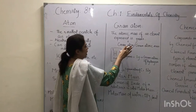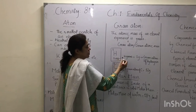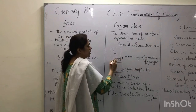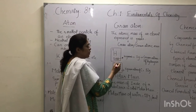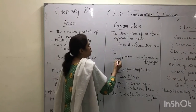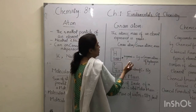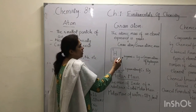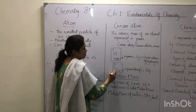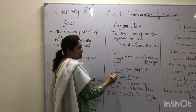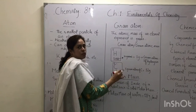A gram atom is the atomic mass of an element taken in grams. From the periodic table, the atomic mass is given with each element, and expressing that in grams gives you the gram atom. In the case of hydrogen, the gram atomic mass is 1 gram. In the case of carbon, the gram atomic mass is 12 grams.